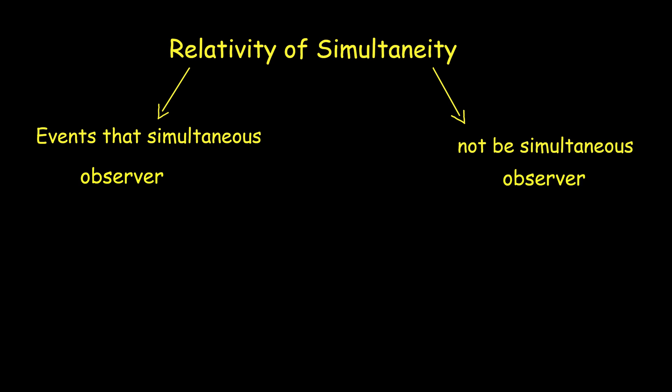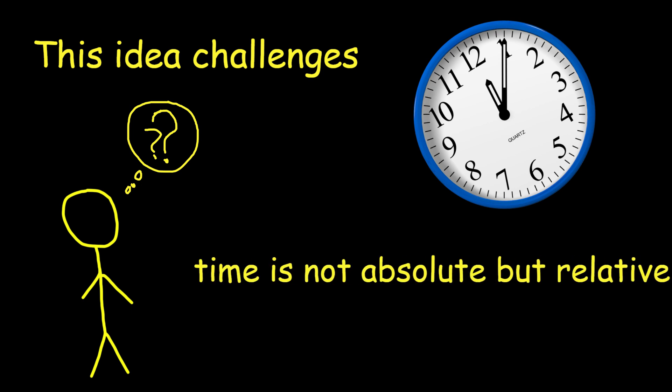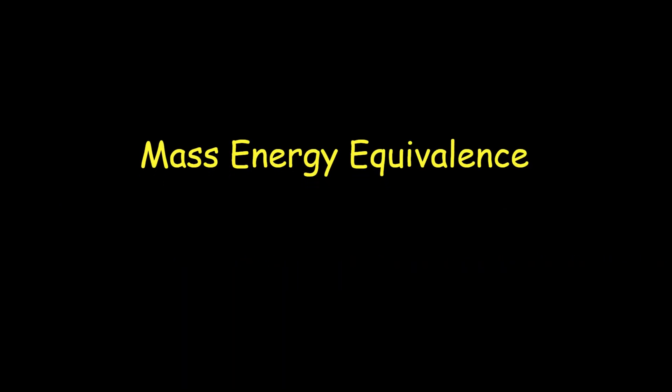Relativity of simultaneity: events that appear simultaneous to one observer may not be simultaneous to another observer moving at a different speed. This idea challenges our everyday notion of time, suggesting that time is not absolute but relative.